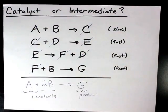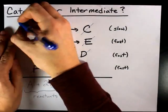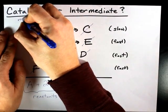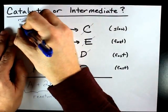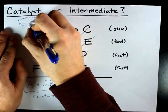The way you tell the difference is that a catalyst is a reactant first in the mechanism and then it's a product.